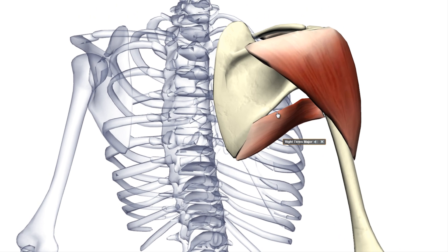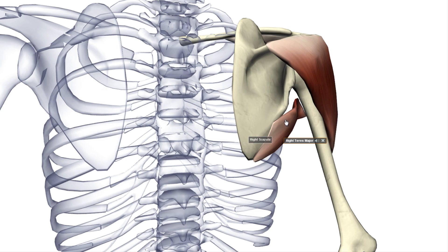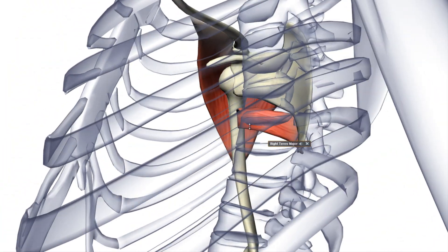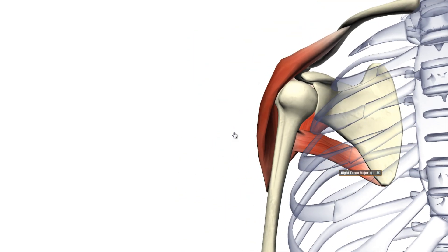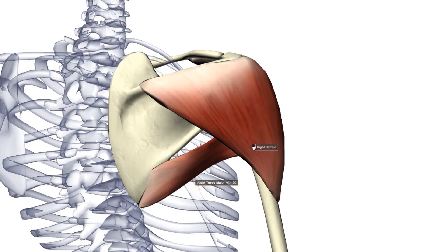The teres major has the origin on the posterior aspect of the inferior angle of the scapula. The insertion is the medial lip of the intertubercular sulcus of the humerus. On this model you cannot see that sulcus, but if you watch my lessons about bones in my videos, you will learn about this sulcus and all the other sulci on the bones.